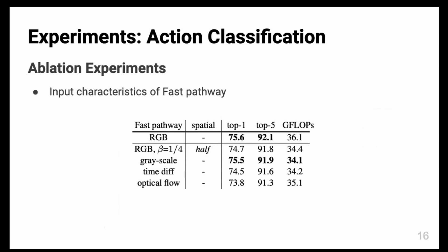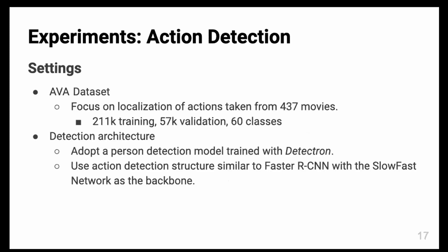They tested other ablation studies for the input characteristics of the fast pathway. From the start, I mentioned the M cells which are insensible to colors, and they tested that point too. Even though they do not use the RGB information, they can achieve almost similar results with grayscale information for the fast pathway. They tried to simulate the characteristics of M cells.